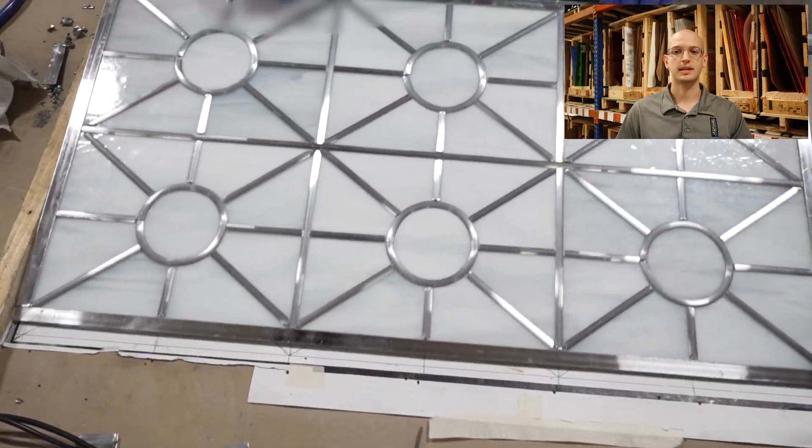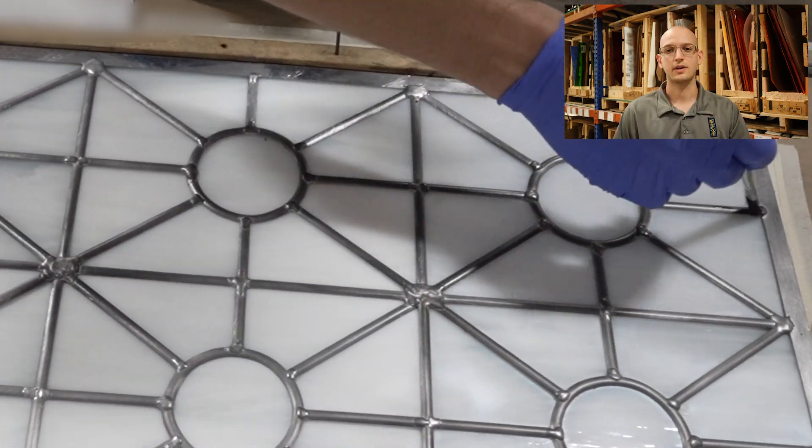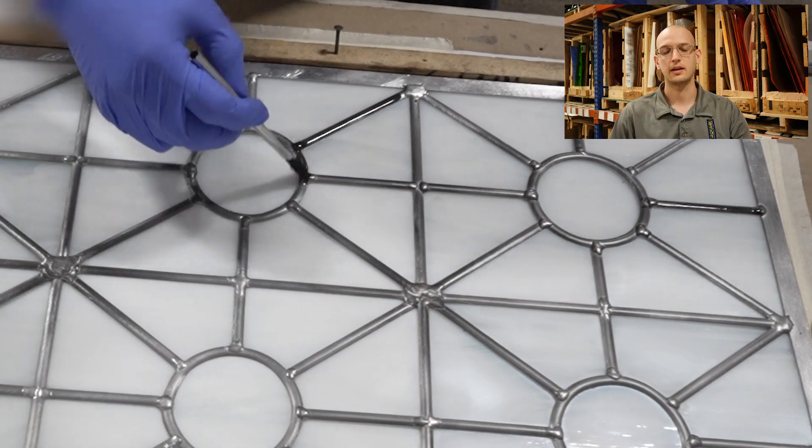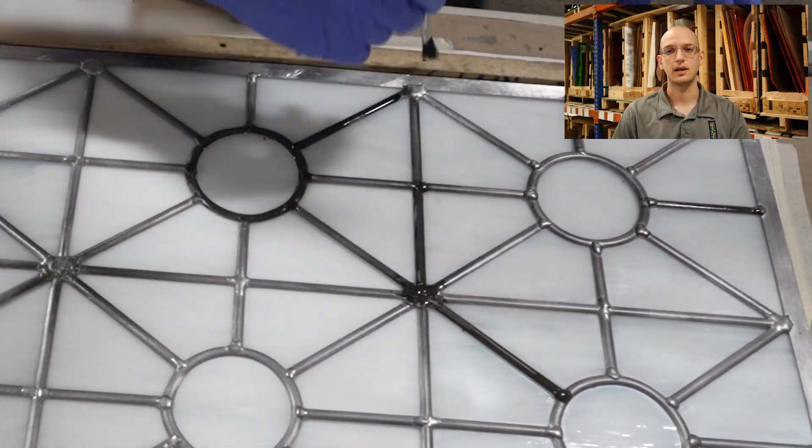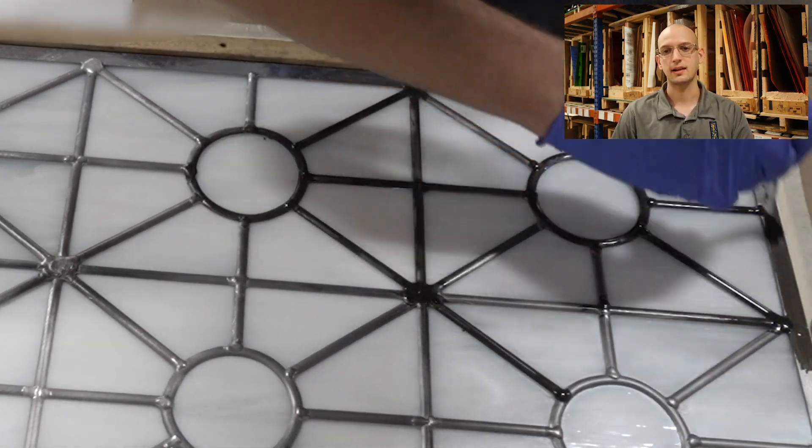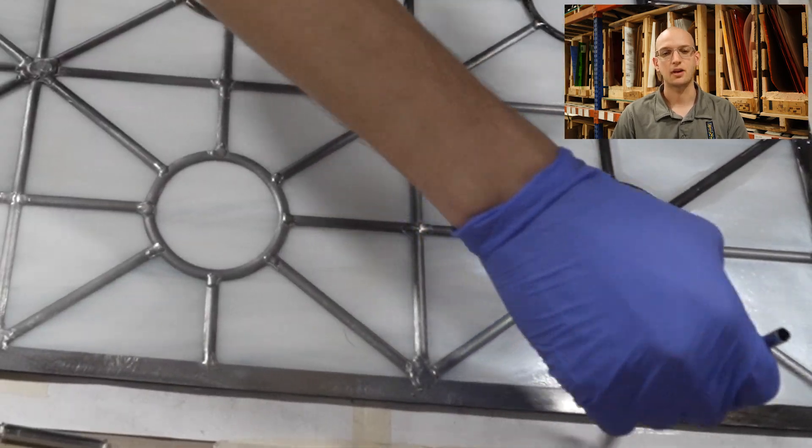After finishing the first side, we'll simply flip it over and repeat. Now if you have seen any of our other videos, you'll notice we are doing something a little different this time. Normally when fabricating a stained glass window, this is the stage where one would begin applying stained glass putty, but we actually won't be applying stained glass putty to this panel, and there's a good reason why.